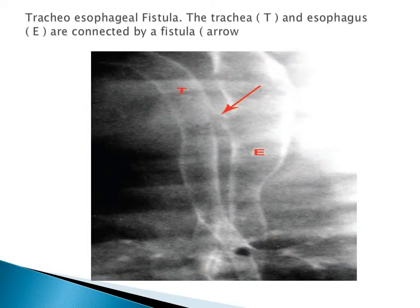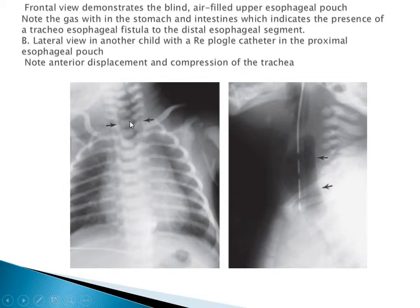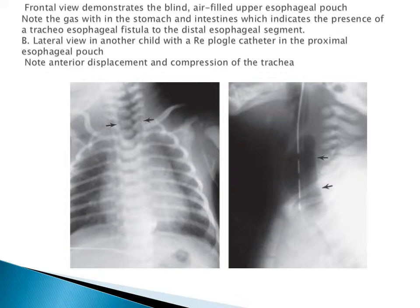This is a tracheoesophageal fistula - we see the trachea, the esophagus, and the fistula between them. This frontal view demonstrates a blind-ending air-filled upper esophageal pouch. The gas in the stomach and intestine indicates the presence of a fistula. If you have gas, there is a fistula. If you have no gas, there is no fistula, just atresia. On lateral view, if there is no gas, there is no connection between the distal esophagus and the trachea.